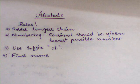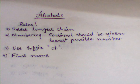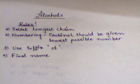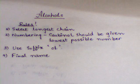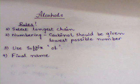Here are the basic rules for alcohol naming. Rule number 1 is select the longest chain. Rule number 2 is numbering. Remember that while numbering alcohols, the carbinol atom should be given the lowest possible number. The carbinol is that carbon atom which is directly attached with the OH group. For alcohols, we use the suffix 'ol'.